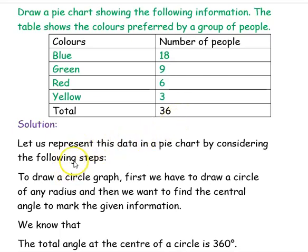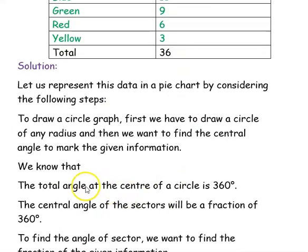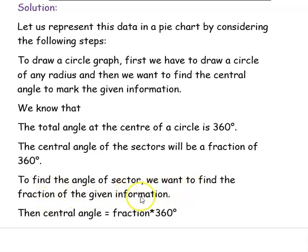Solution. Now we want to represent this data in a pie chart by considering the following steps. First step, we want to draw a circle of any radius and then we want to find the central angle to mark the given information. We know that the total angle at the center of a circle is 360 degrees. To find the angle of sector, first we want to find the fraction of the given information. The central angle equals fraction into 360 degrees. This is the formula for central angle.